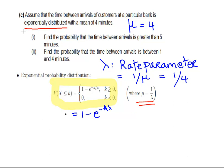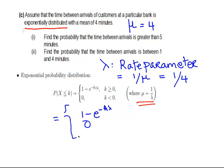The two expressions are directly equivalent to each other — just a slight change of notation. So that's important. Now, find the probability that the time between arrivals is greater than 5 minutes.